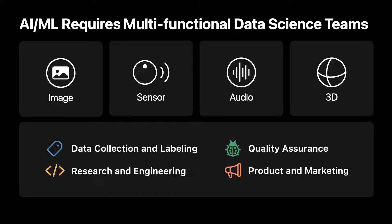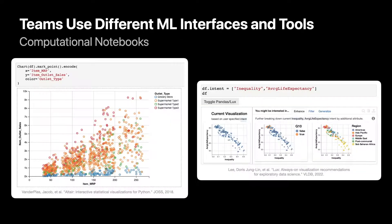To effectively chain these complex models, large multifunctional teams are often needed to cover everything from data collection to research, quality assurance, and product management. To understand what these AI systems have learned, various stakeholders use machine learning interfaces.